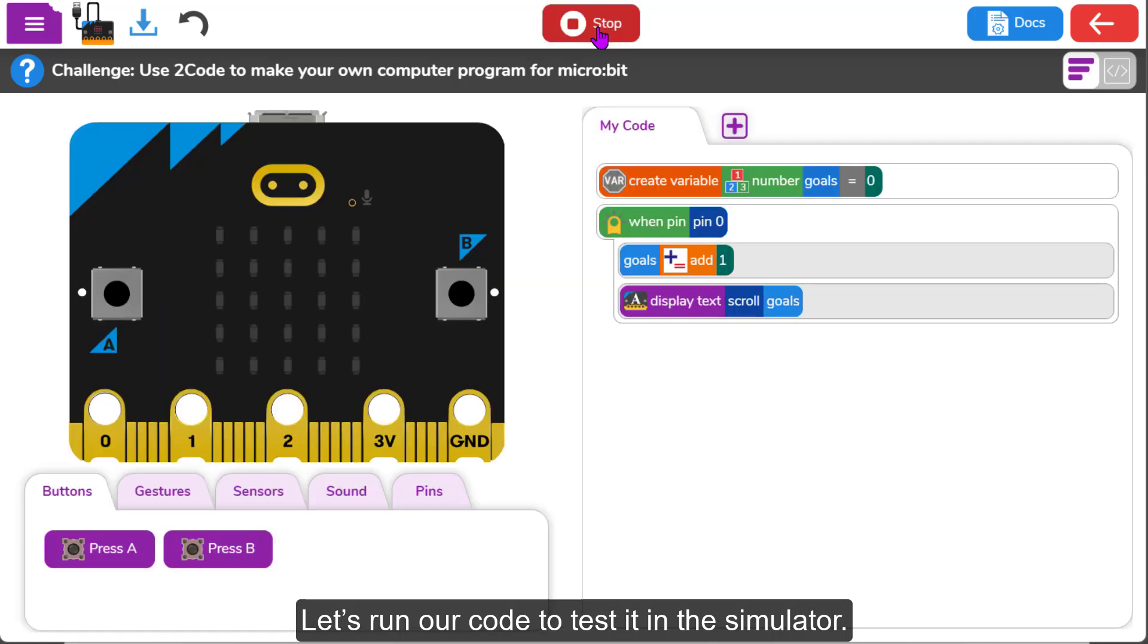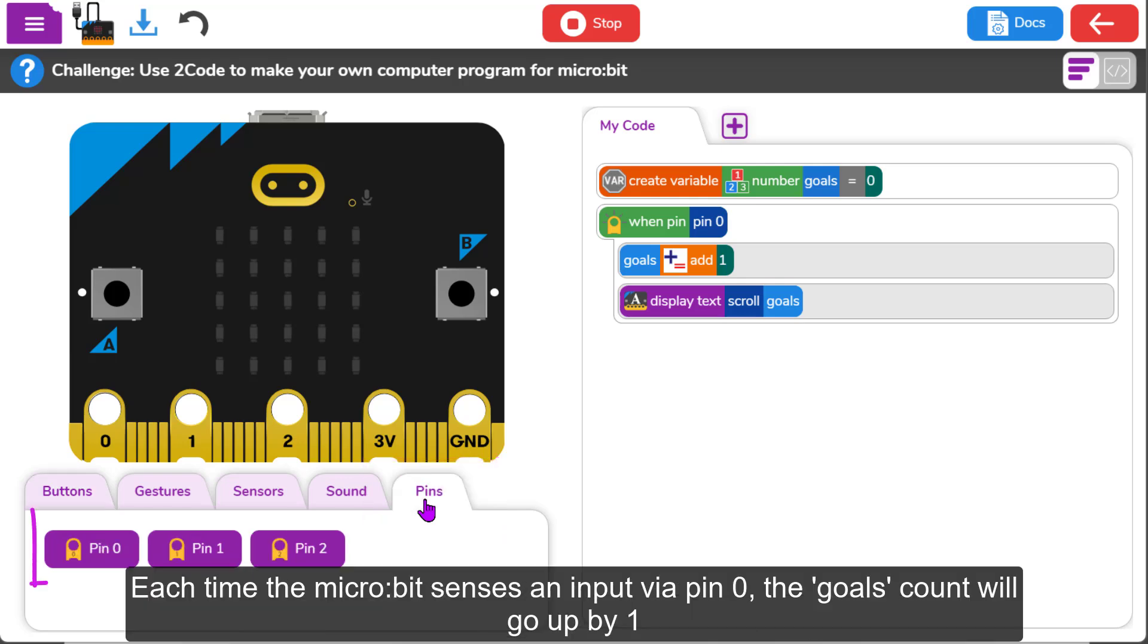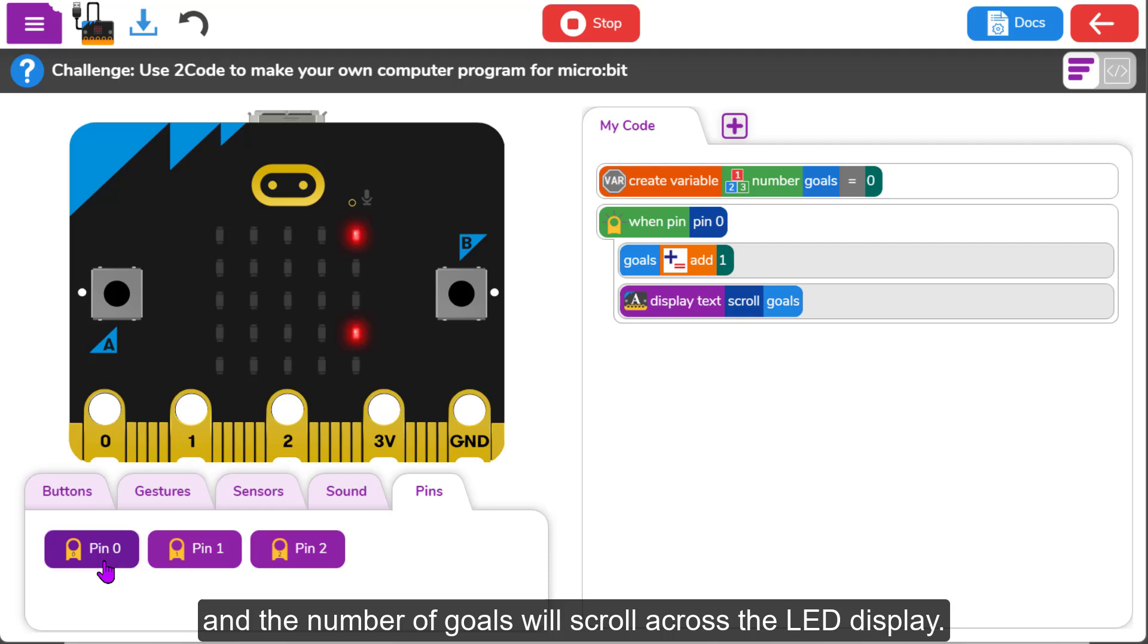So let's run our code to test it in the simulator. Let's click on the pins tab beneath the simulator. Each time the microbit senses an input via pin zero, the goals count will go up by one and the number of goals will scroll across the LED display.